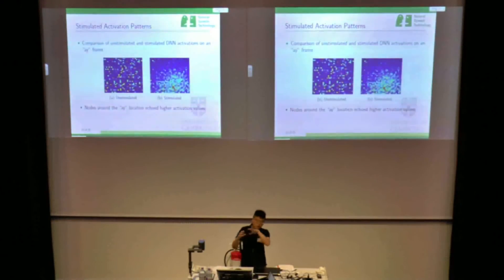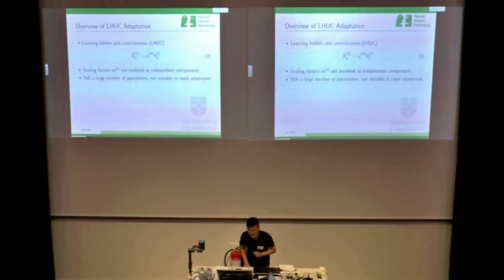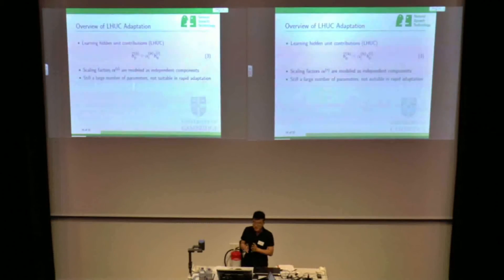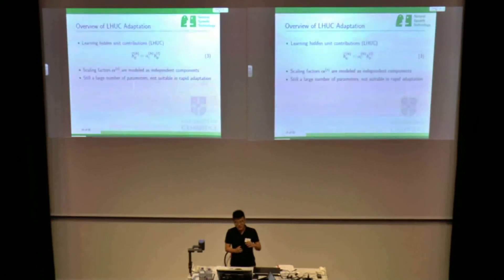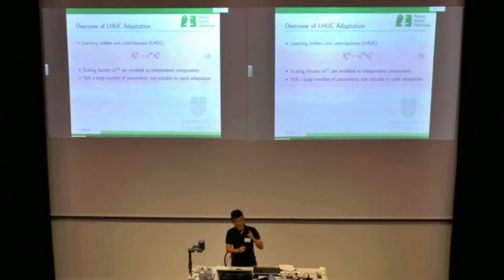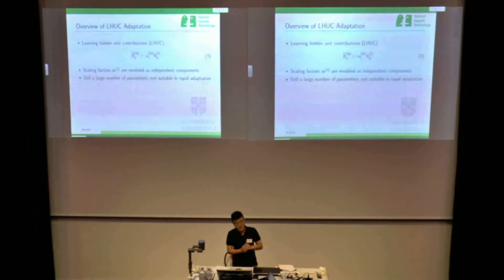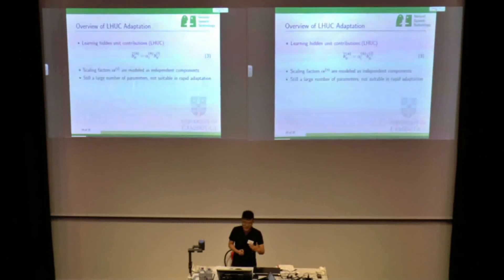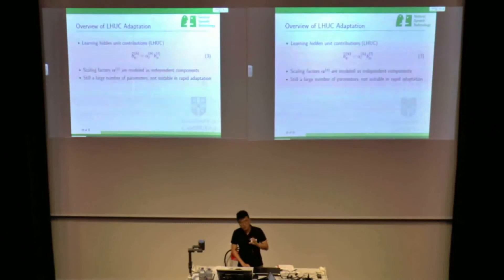Since the stimulated DNN gives a very smooth surface for the hidden outputs, we can propose novel adaptation schemes based on these characteristics. In this work, we focus on the Linear Hidden Unit Contribution — the L-Hook — adaptation scheme. This adaptation method has been successfully used in a variety of tasks and gives good performance. It introduces a scaling factor for each hidden unit on each hidden layer, but it still involves a large number of parameters, making it unsuitable for rapid adaptation scenarios where we have only 10 or 12 seconds of data.